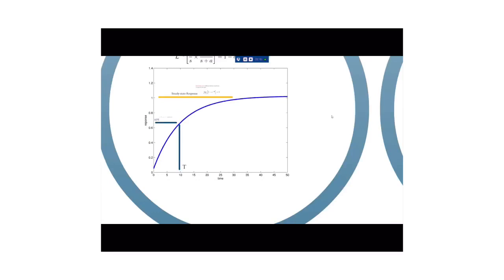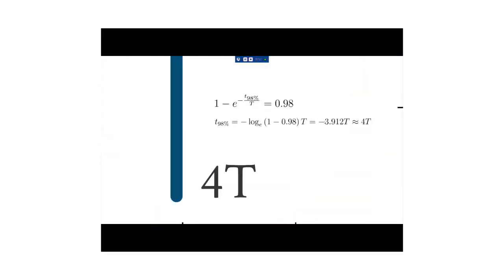With 63% of its steady-state value after one tau, what they really ask you for is the time it takes to get from 10% to 90% of the steady-state response. And we're engineers, so we'll approximate 3.912 as 4.